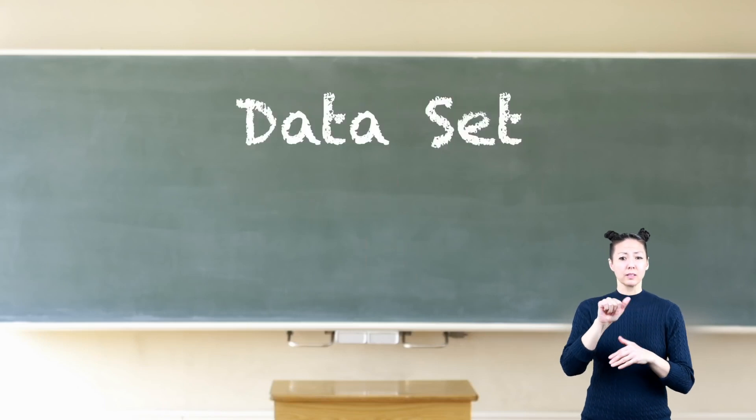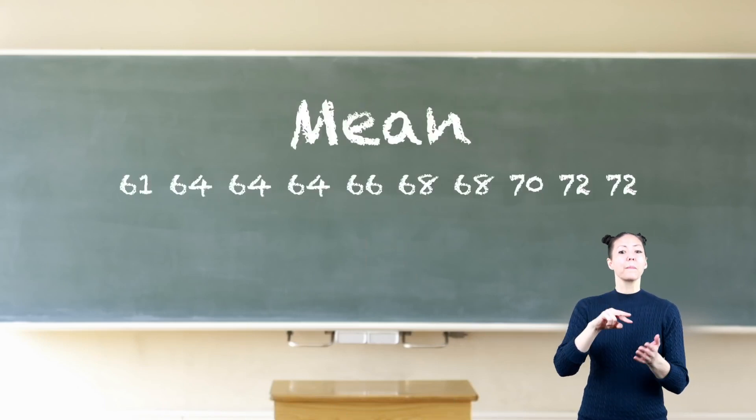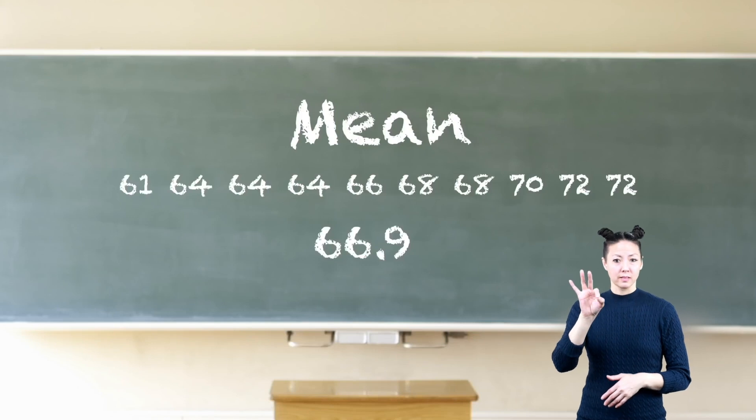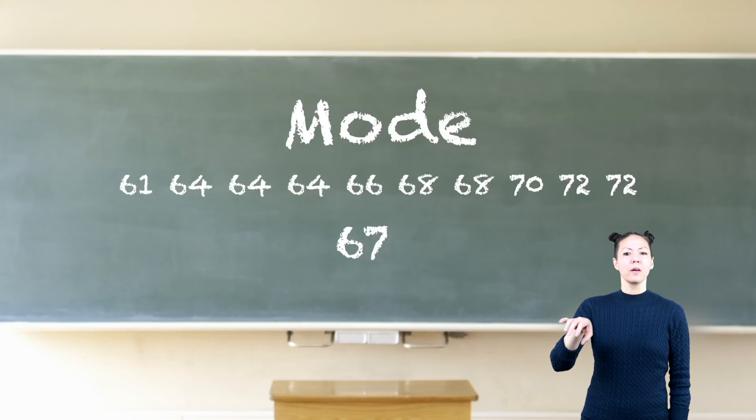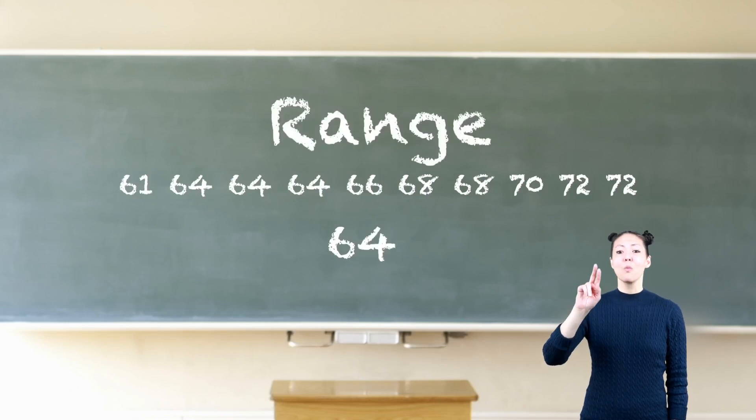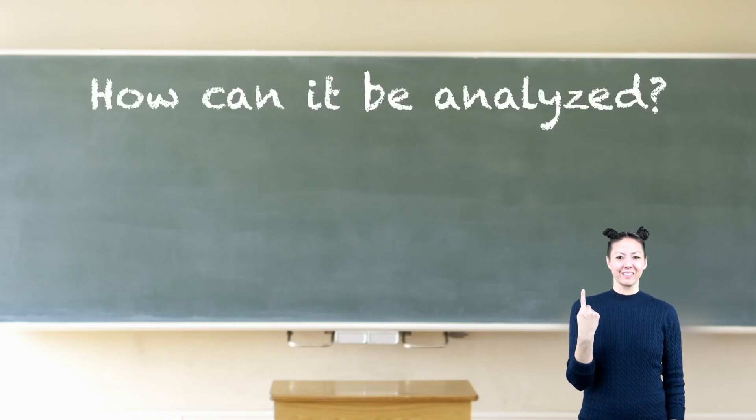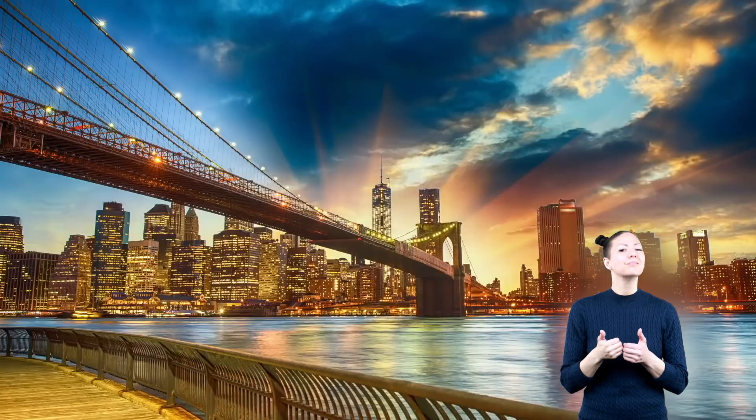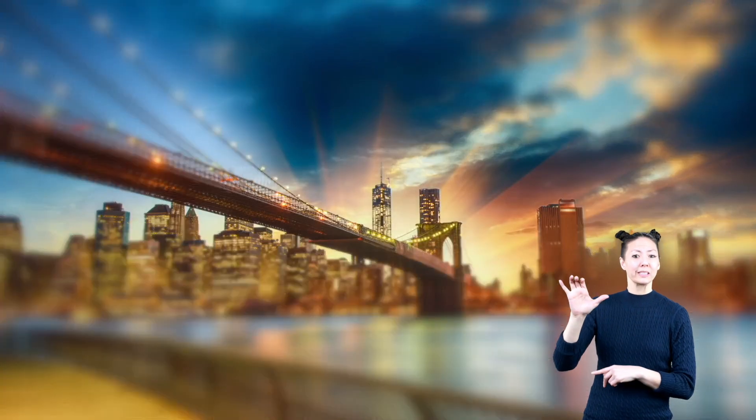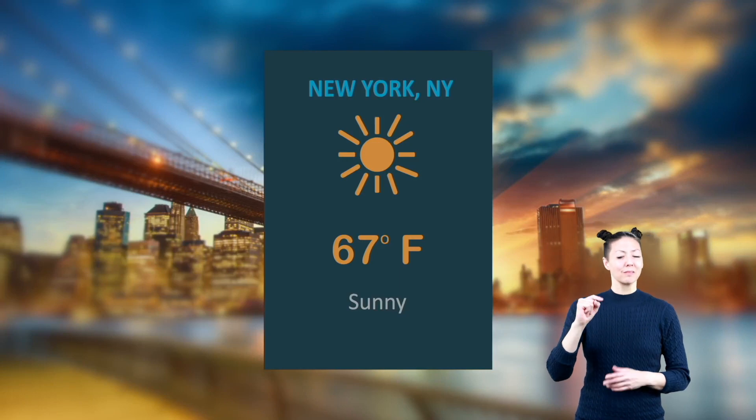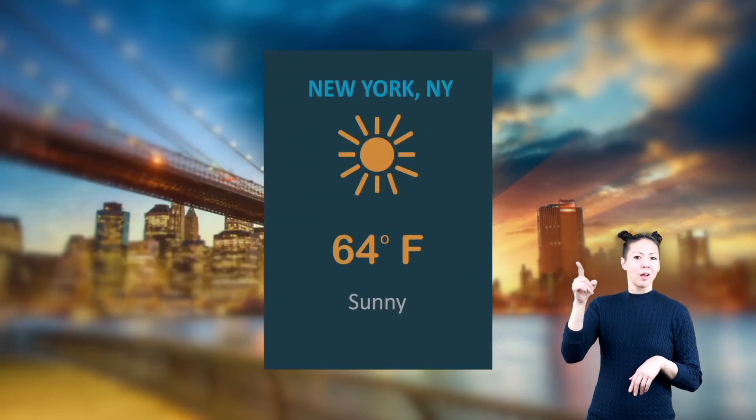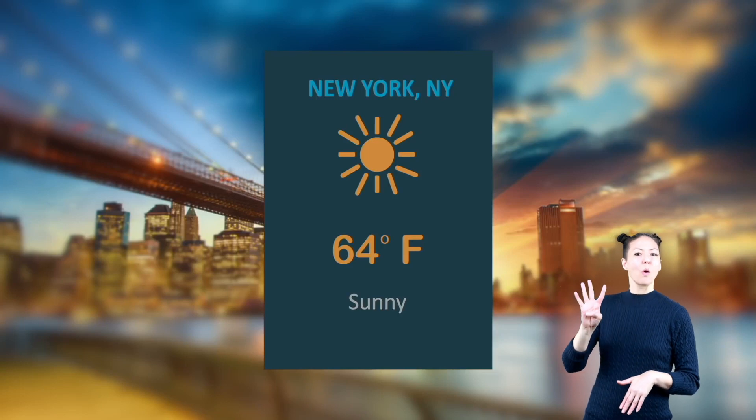In summary, the data set has 10 values. Its mean is 66.9, the median is 67, the mode is 64, and the range is 11. How can this be analyzed? The average temperature in New York City is nearly 67 degrees Fahrenheit in October, but sometimes it can get a little cooler because the mode was lower at 64 degrees Fahrenheit.